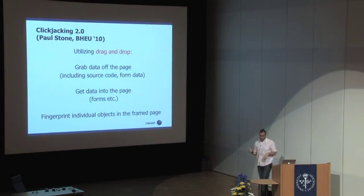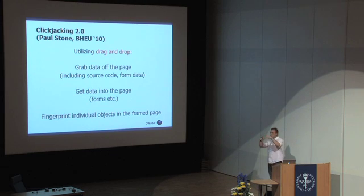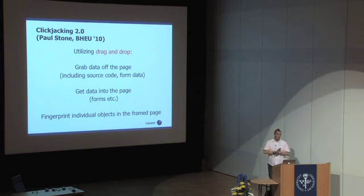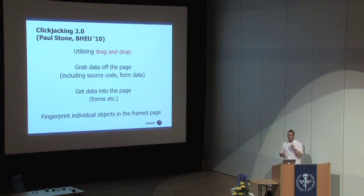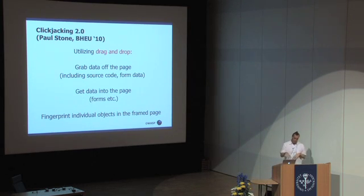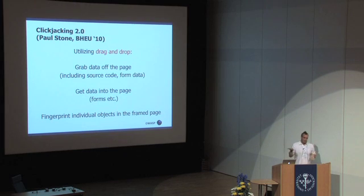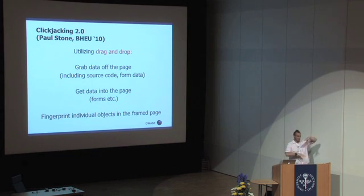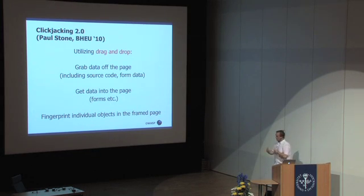Just recently, Paul Stone at Black Hat came up with the idea that you can actually utilize drag-and-drop to extract and plant data into a framed page. You can get the source code of a framed page, you can get CSRF tokens — all kinds of leakage can happen. And you can actually use URL fragment identifiers to do some pretty severe leaking based on how much your page scrolls — dynamically reading scroll amount to infer information.